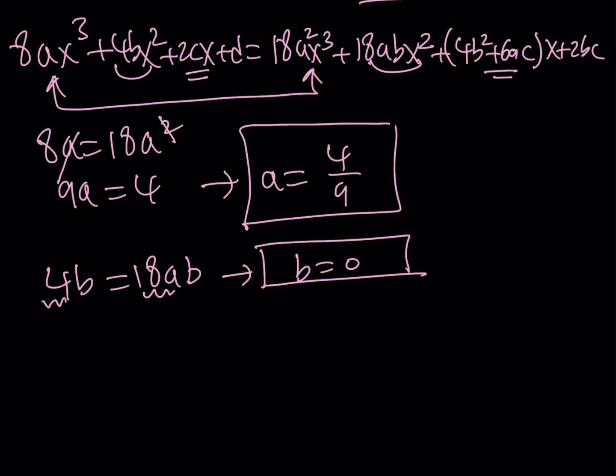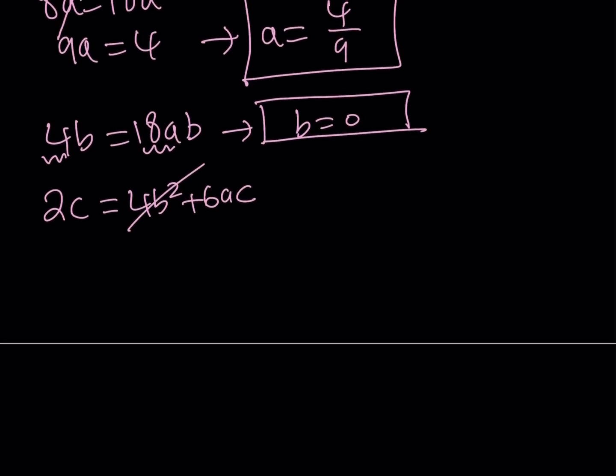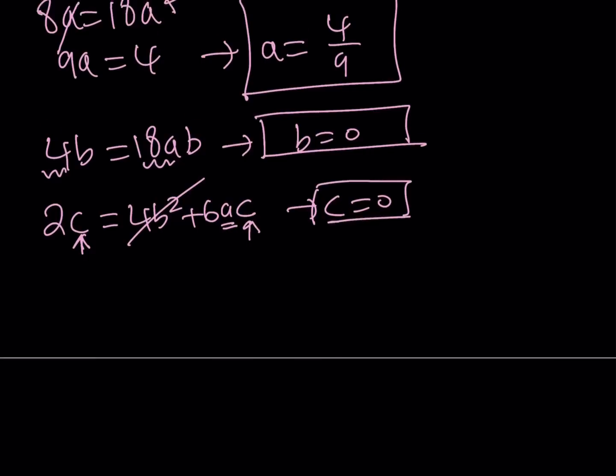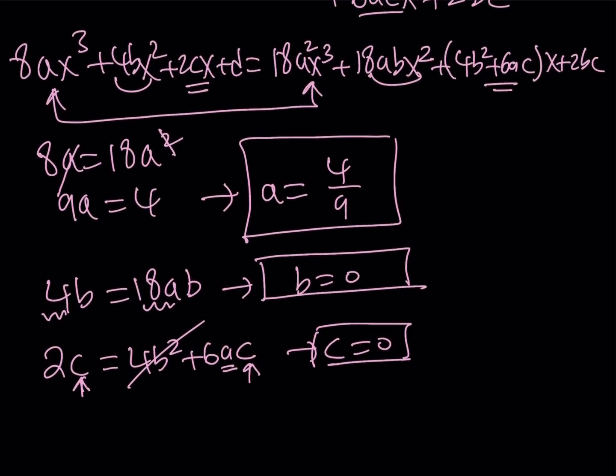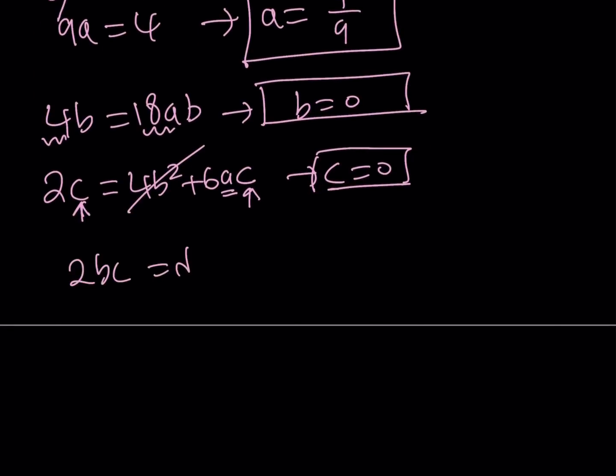Now we know that b is 0. Let's set these two equal: 2c = 4b² + 6ac. But we know that b equals 0, so that's going to cancel out. Here a is not 0, therefore we have the same situation: c has to be 0. How about d? You can set 2bc = d. Since b and c are both 0, d is also going to be 0. So all the coefficients except for a are 0.